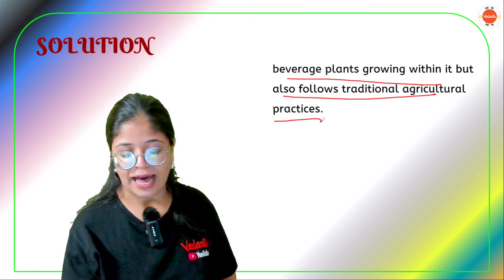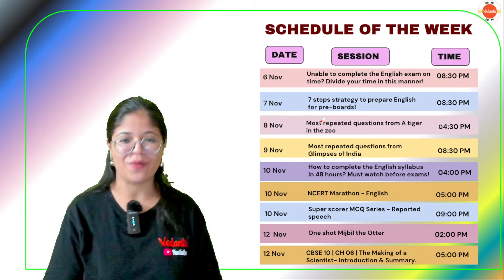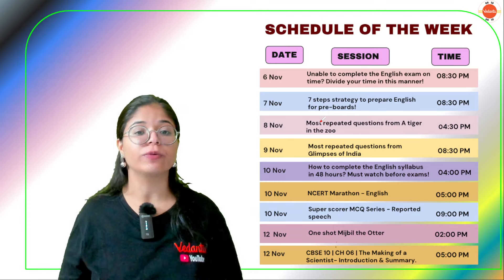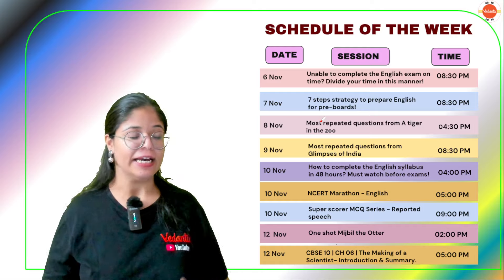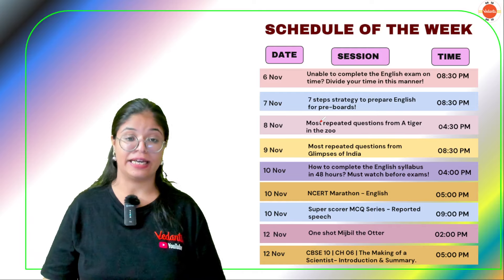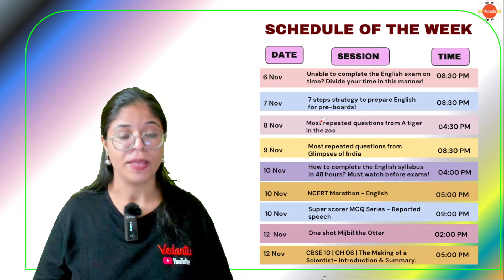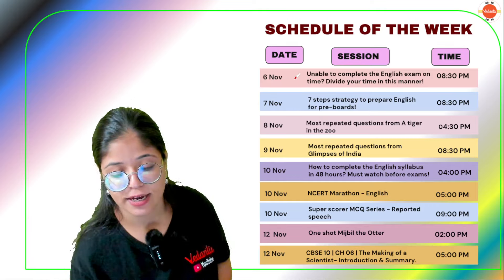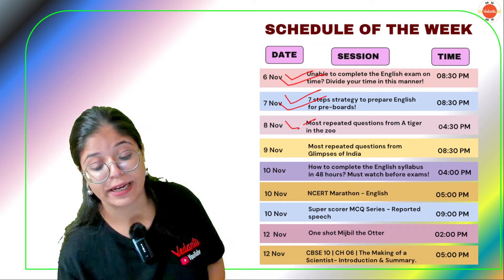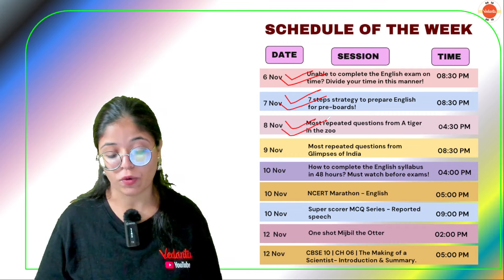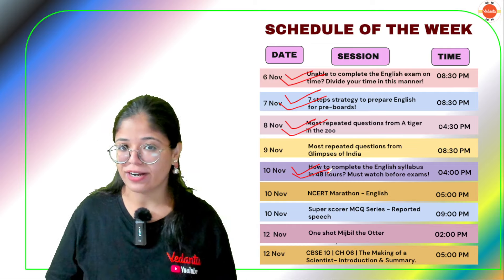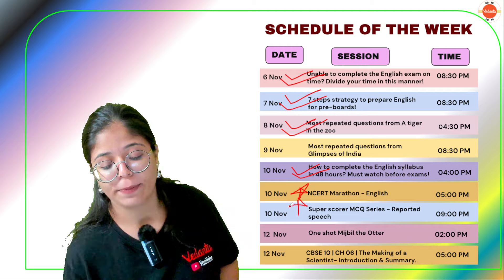We are done with all the questions for today. For our upcoming schedule, there are amazing sessions this week — including how to divide your time over 3 hours to complete your entire English paper, a 7-step strategy for pre-boards, most repeated questions from 'A Tiger in the Zoo', and how to complete your English preparation in just 48 hours. Then there is a CRT marathon and a live week quiz.